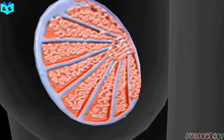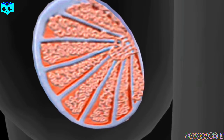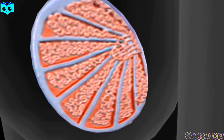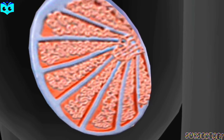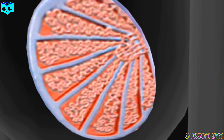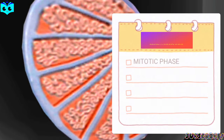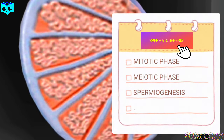Spermatogenesis is a crucial biological process that ensures the production of mature and functional sperm cells. It takes place in the testes, those remarkable organs responsible for producing testosterone and, of course, sperm. Spermatogenesis occurs in three main phases: the mitotic phase, the meiotic phase, and finally, spermiogenesis.